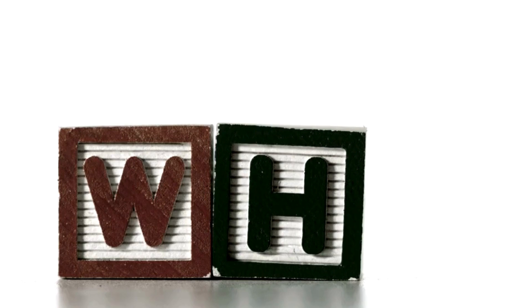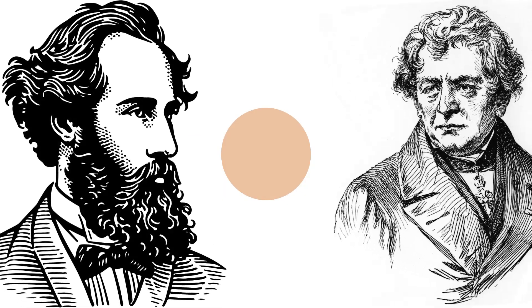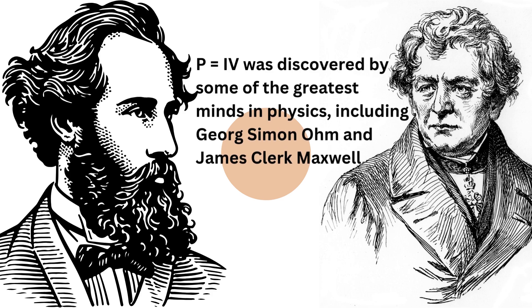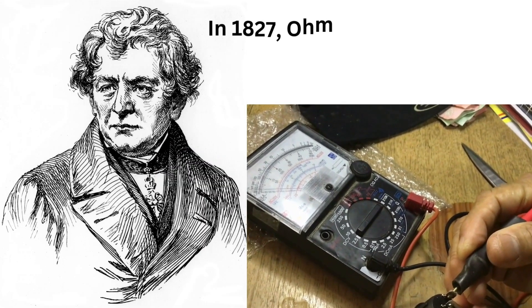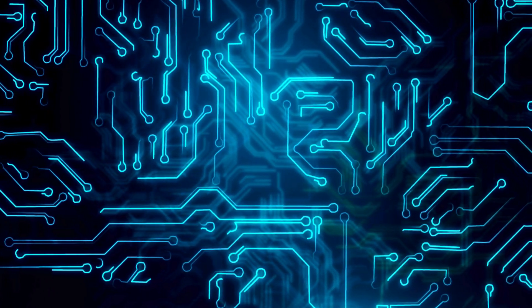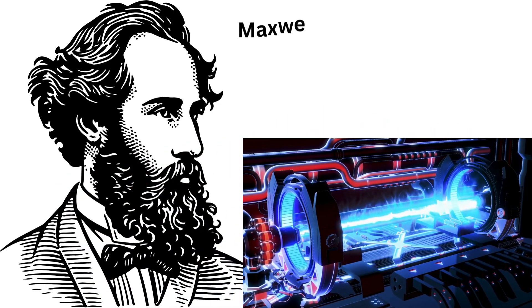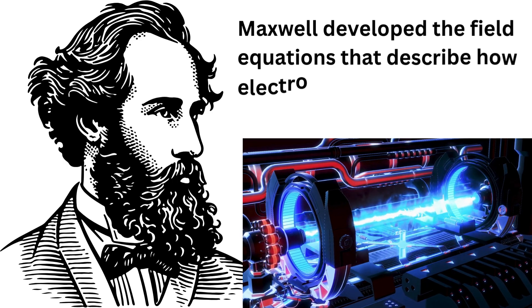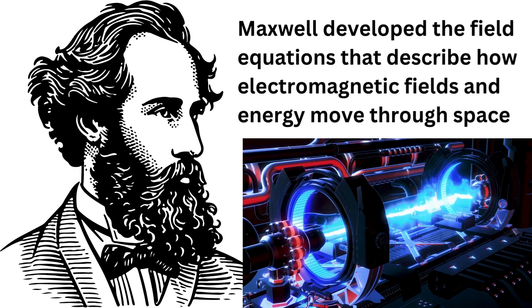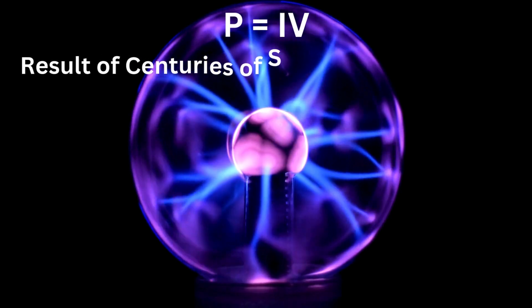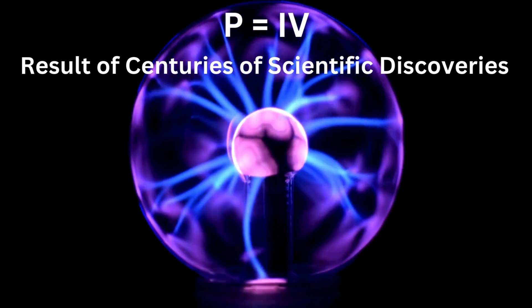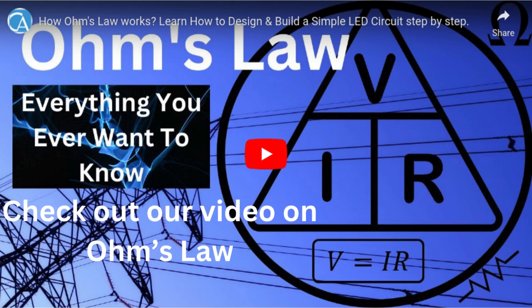Who came up with this concept? The formula P = IV is actually an application of basic principles discovered by some of the greatest minds in physics, including Georg Simon Ohm and James Clerk Maxwell. In 1827, Ohm formulated Ohm's Law, which relates voltage, current, and resistance — the foundation for understanding how power works in an electrical circuit. Maxwell developed the field equations that describe how electromagnetic fields and energy move through space, laying the groundwork for modern electronics. While P = IV wasn't discovered by a single person, it's a culmination of many discoveries over the centuries. Check out our video on Ohm's Law for more detail.